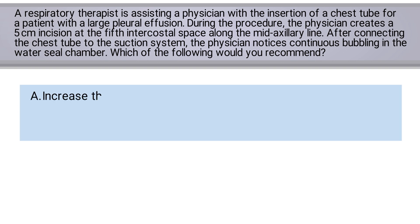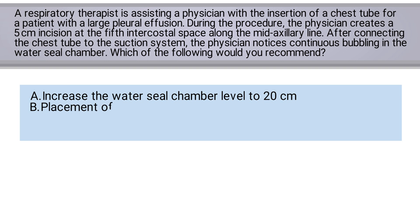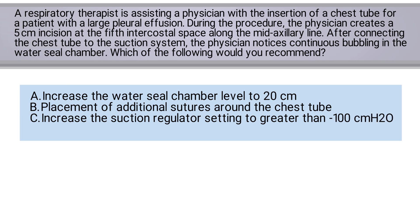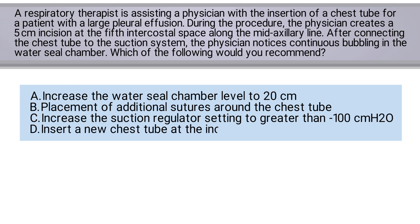A: Increase the water seal chamber level to 20 centimeters. B: Placement of additional sutures around the chest tube. C: Increase the suction regulator setting to greater than negative 100 centimeters of water pressure. Or D: Insert a new chest tube at the incision site.